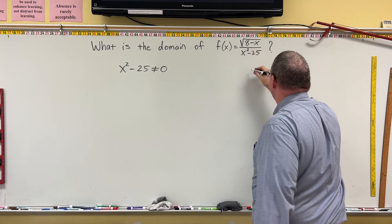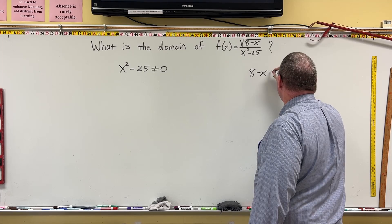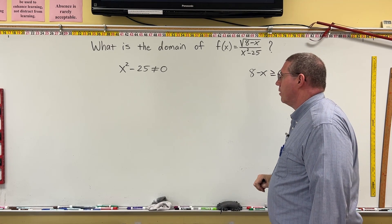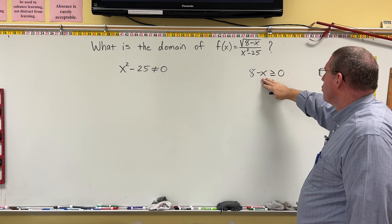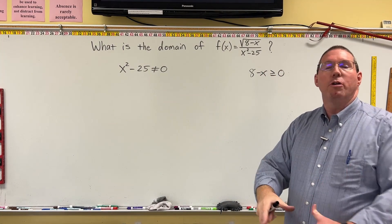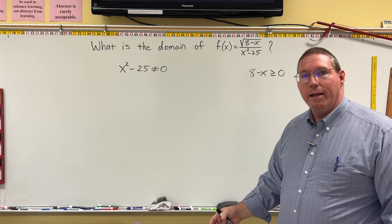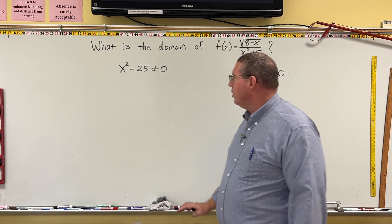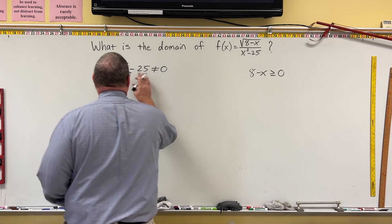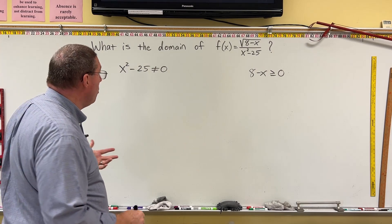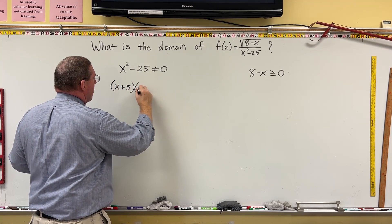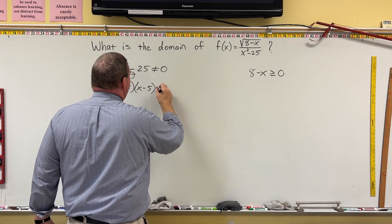This will satisfy the domain of the rational function denominator, and this will satisfy the domain of the square root numerator. Once we have a domain for each, we find their intersection. For the denominator, x² minus 25 factors into (x + 5)(x − 5) — that's a difference of squares — and this cannot equal zero. So neither factor can equal zero.